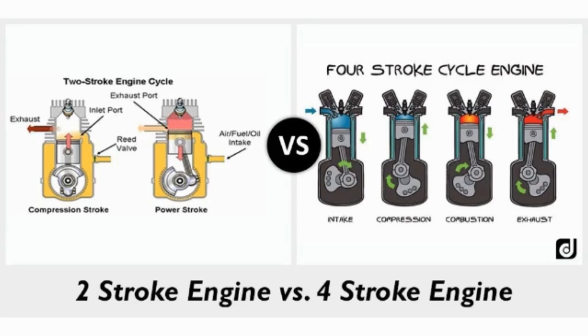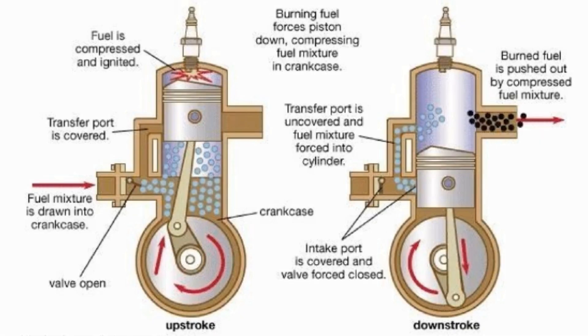The crankshaft rotates one time during two strokes. The two-stroke petrol engine completes its working cycle in only two strokes of the piston, so a combustible charge is ignited at every revolution of the crankshaft. In its simple construction, the two-stroke petrol engine needs no valves; instead, the induction and exhaust process is facilitated by a system of scavenging to forcibly clear the cylinder gases.